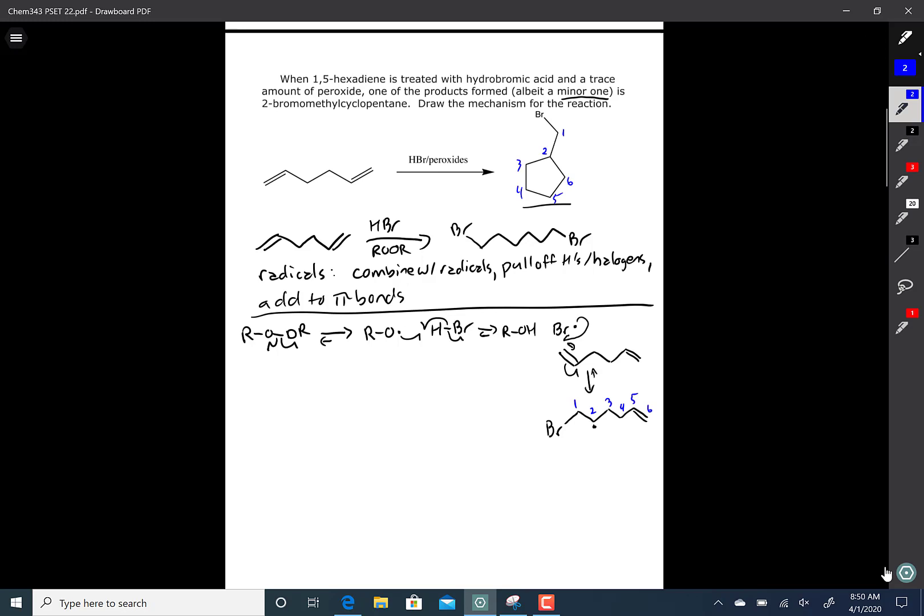What we have that's new in the product that we're trying to get to is a new bond between two and six. And so in order to do that, this radical would need to add to the pi bond. Well, that's what radicals do, is they add to pi bonds.